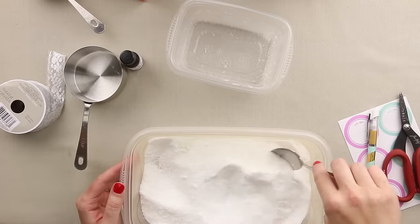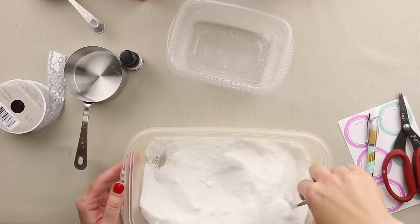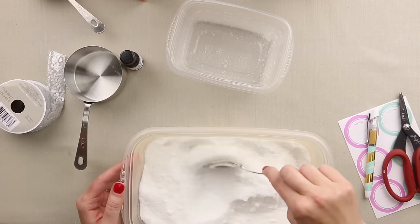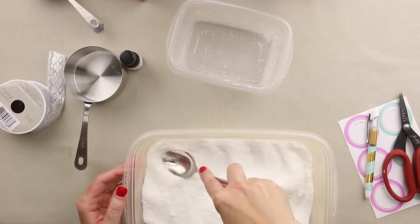So it's a cup of Epsom salts, a cup of our citric acid, and then half a cup of baking soda, along with our essential oils. And I'm just going to mix it all together here.